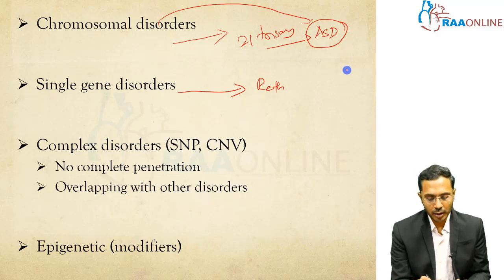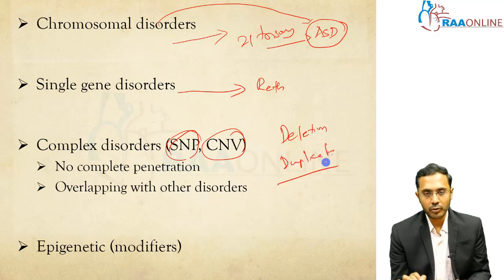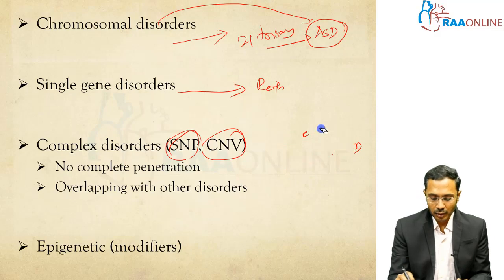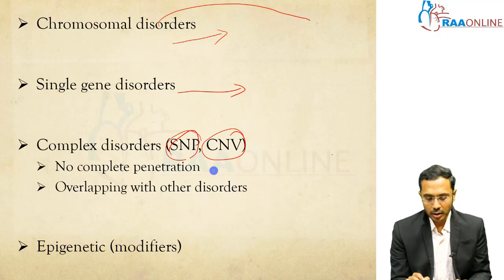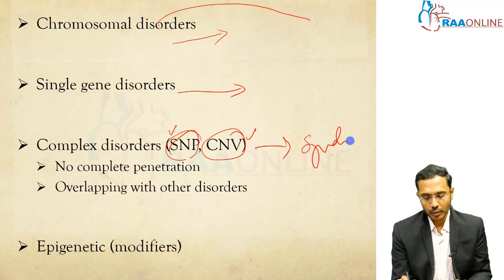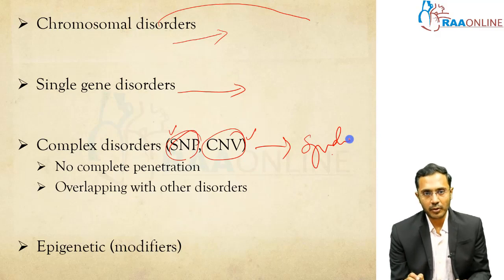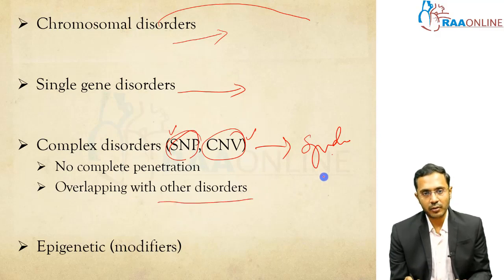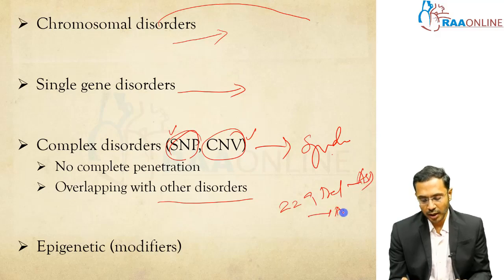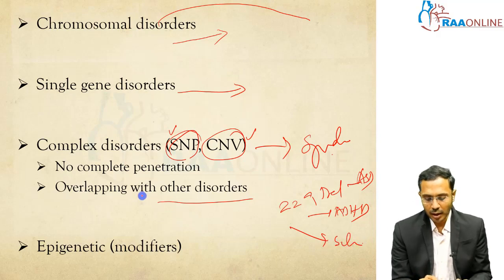Sometimes complex genetic disorders like single nucleotide polymorphism, or copy number variations — that is deletions or duplications of a set of chromosomes — can present with Autism Spectrum Disorder. These are complex because some people can be carriers with no complete penetrance. Not all people with single nucleotide polymorphism or copy number variation will present with a syndrome. Some will be normal carriers, but a subsequent generation child may have autism spectrum disorder. For example, 22q deletion can present with ASD, and the same child can also have ADHD symptoms or schizophrenia — overlapping with other disorders.